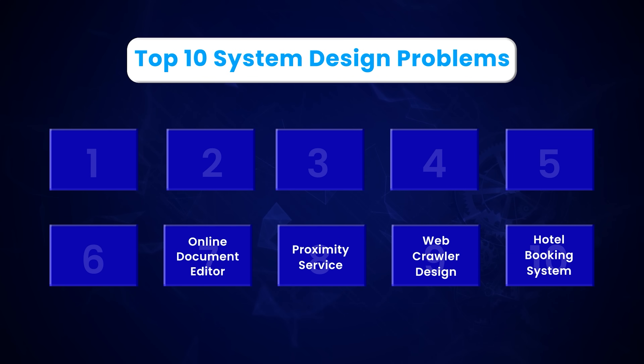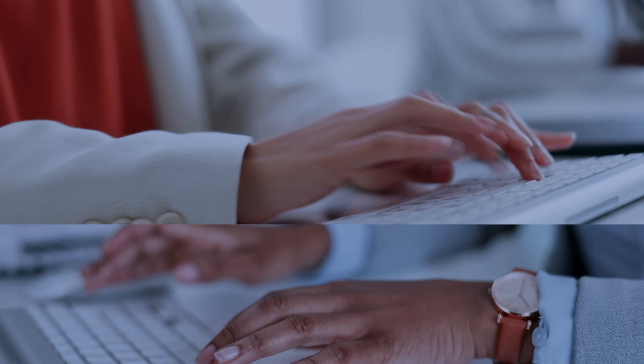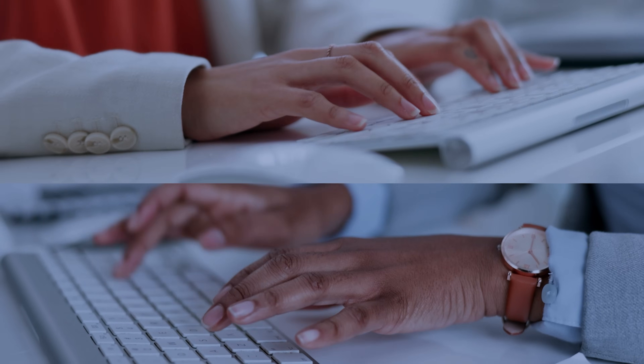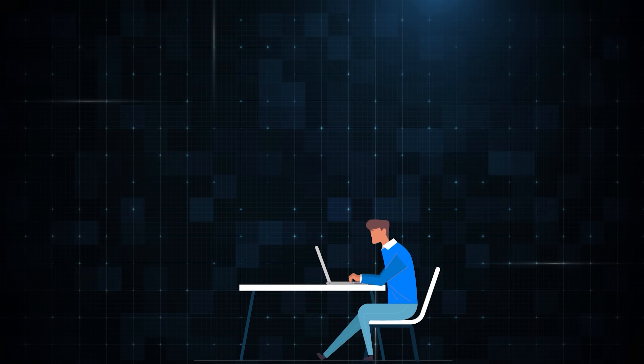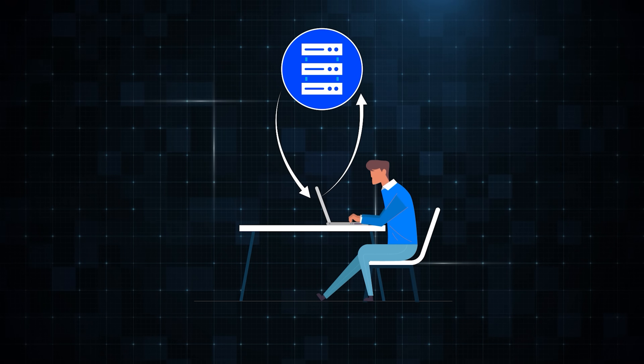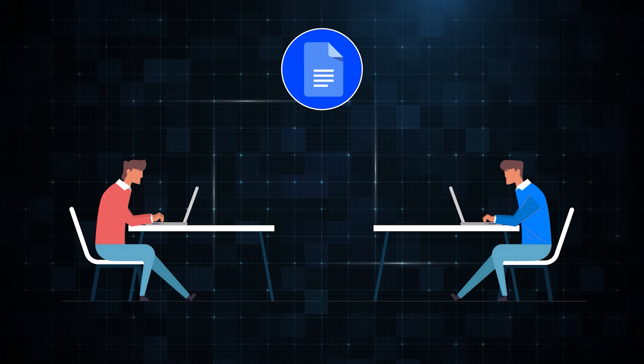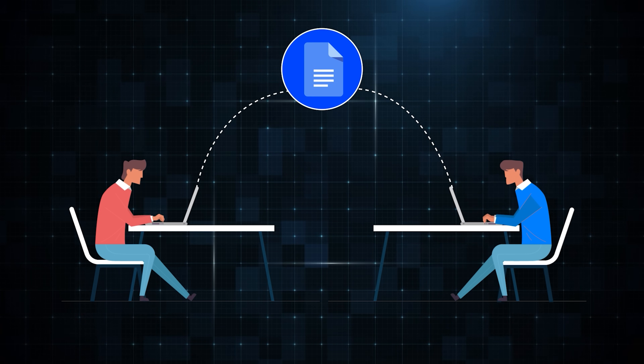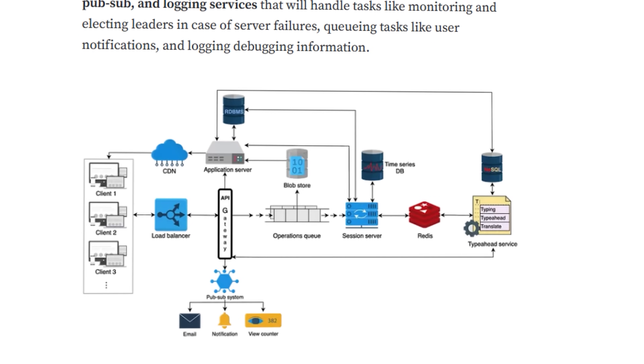At number 7, we have an online document editor like Google Docs. The functional requirements are very interesting — multiple users should be able to edit the same document simultaneously, and if users edit the same portion of the document, the system should be able to resolve the conflicts. Key questions include: What kind of connection should the client have with the servers — is a one-way connection enough, or do you need a two-way connection to see edits? If two users edit or delete the same character, how would you resolve the conflict? Do you need a log, or are there non-blocking ways? Read the linked article to find answers.